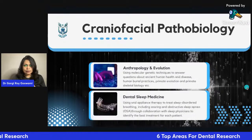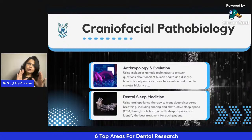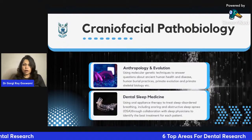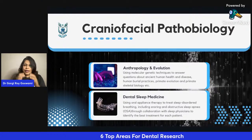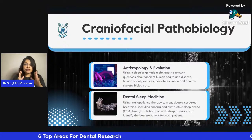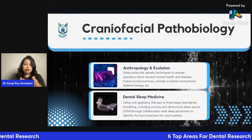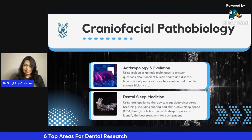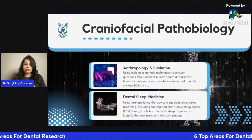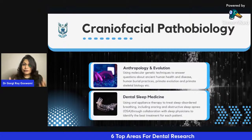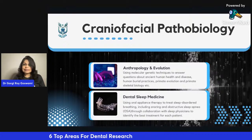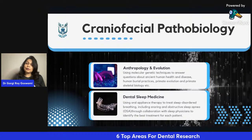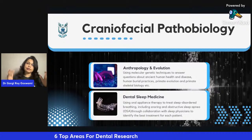Going to the next category — craniofacial pathobiology. We know about craniofacial anomalies and TMJ problems, but today I will give you two examples you might not have heard before. One is anthropology and evolution: this involves the use of molecular genetic techniques to answer questions about ancient human health and disease, human burial practices, primate evolution, and primate skeletal biology, all being investigated across the globe.